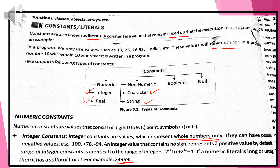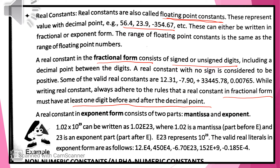That type of data we will discuss later. Now, let us discuss the real constant. Real constant is nothing but a floating point constant. This represents the value with the decimal point — that is the decimal number. It can be written either in the fractional or exponent form. The real constant with no sign is considered to be positive.